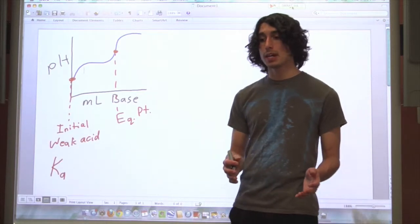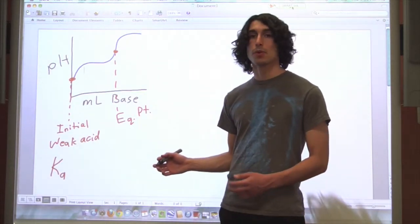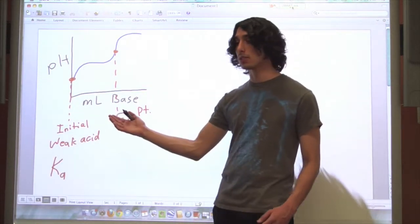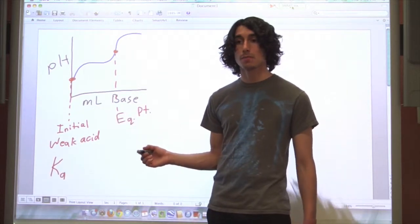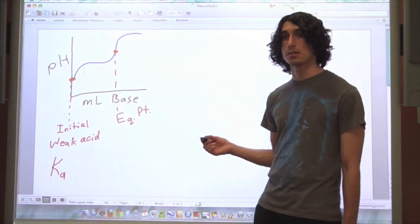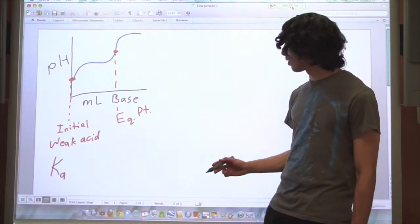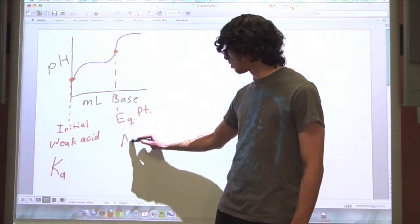So if we react a weak acid with a strong base, we're going to get a reaction that goes to completion to create water and a salt. In this case, with acetic acid and sodium hydroxide, the salt that you'll end up with is sodium acetate.